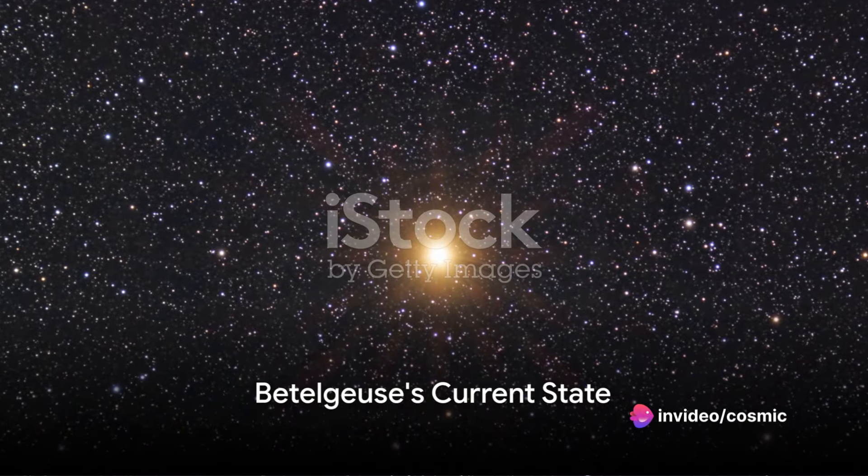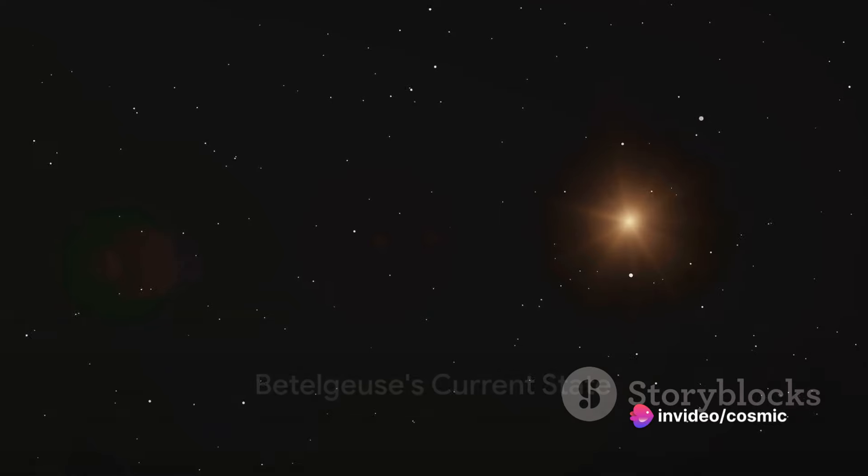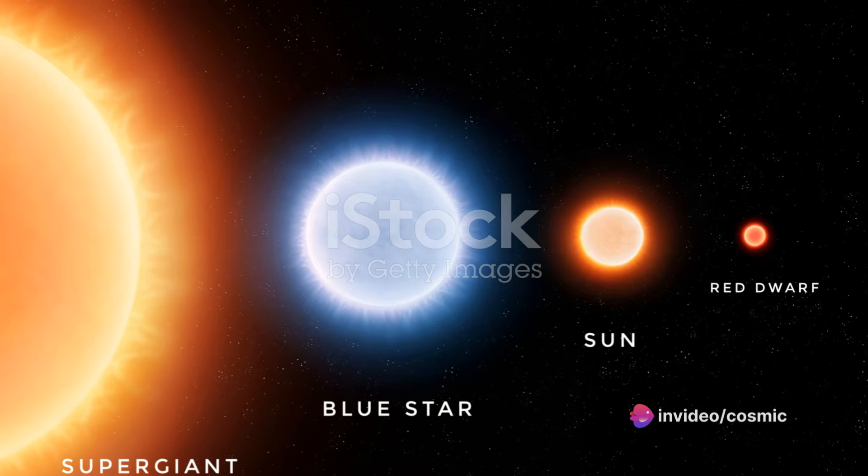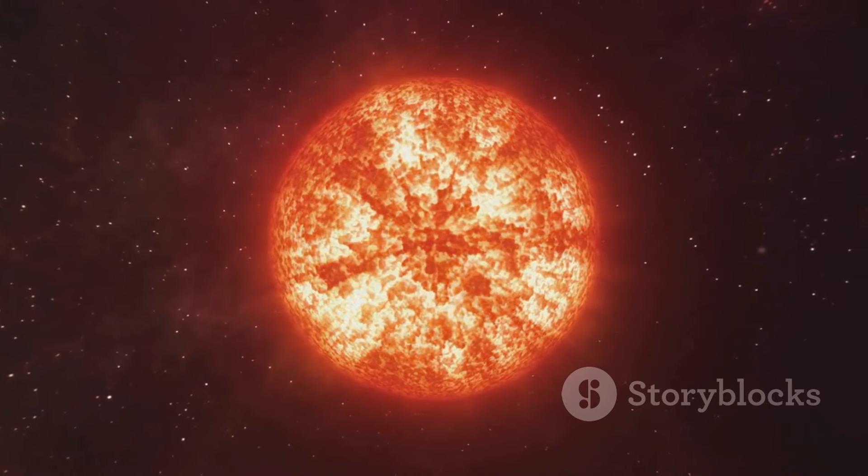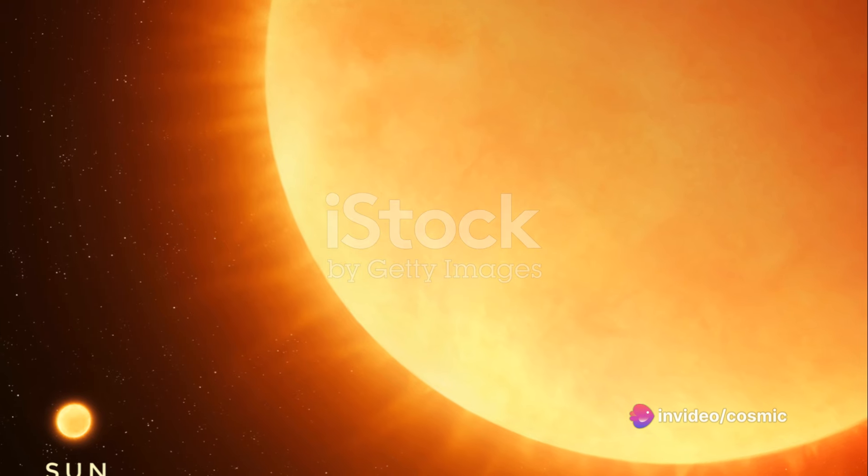Betelgeuse, one of the brightest stars in the night sky, is nearing its end. This massive star, a red supergiant, has been exhibiting some intriguing behavior of late. It's been dimming, which is often an indication that a star is preparing for its final act, a supernova explosion.